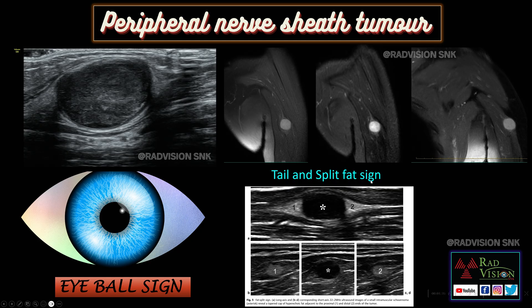On MRI you can see the hyperintense fat on either side of the lesion, especially on T1-weighted images. The most common peripheral nerve sheath tumors are neurofibroma and schwannoma. Schwannoma has a better prognosis because the mass adheres to the nerve with the nerve seen at the periphery of the lesion, so it can be resected completely. In neurofibroma, the nerve passes completely through the lesion, requiring wide dissection and reconstruction.